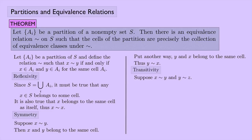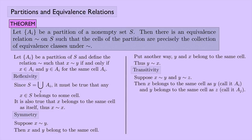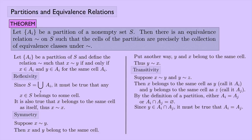For transitivity, suppose X is equivalent to Y and Y is equivalent to Z; we want to show X is equivalent to Z. This means X belongs to the same cell as Y — call it A sub I — and Y belongs to the same cell as Z — call that A sub J. By the definition of a partition, either these cells are the same or they're disjoint. But they do have something in common: the element Y. So Y is in the intersection of A sub I and A sub J, meaning the intersection is non-empty, so A sub I must equal A sub J. Therefore X and Z belong to the same cell, and X is equivalent to Z.